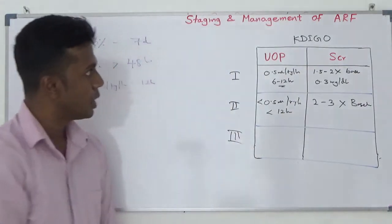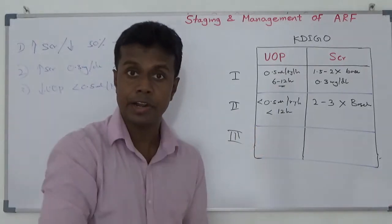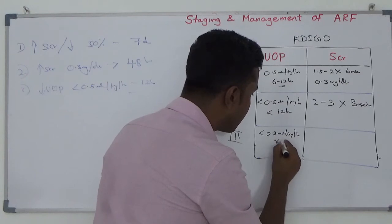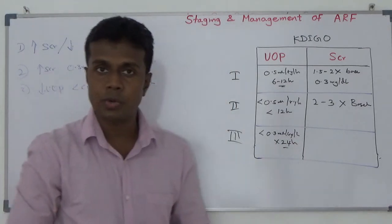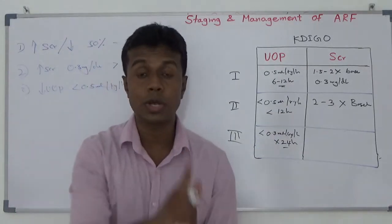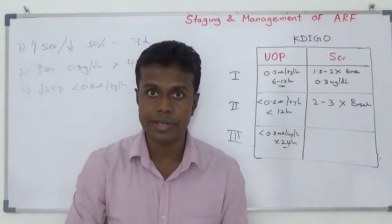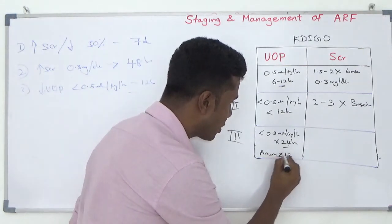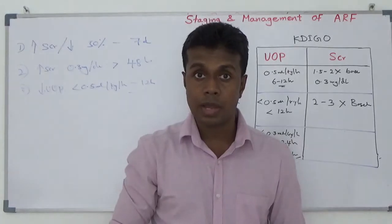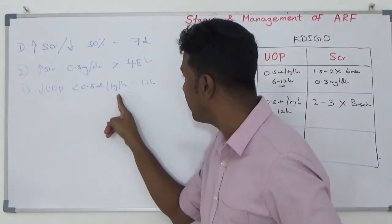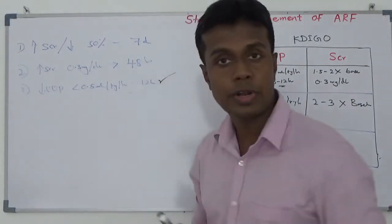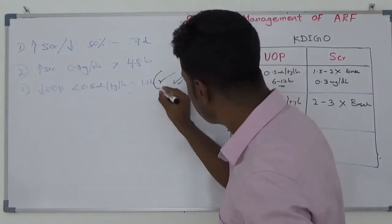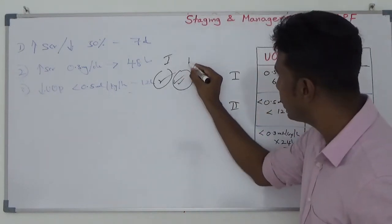Stage 3: you can label your patient as having Stage 3 renal failure once urine output drops to less than 0.3 ml per kg per hour for 24 hours, or anuria for 12 hours. In my previous example, one patient had marginal urine output less than 0.5 ml per kg per hour for 12 hours — that was Stage 1. The second patient had anuria for 12 hours — that was Stage 3.